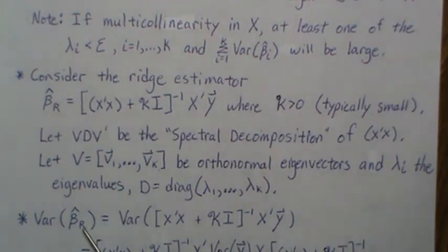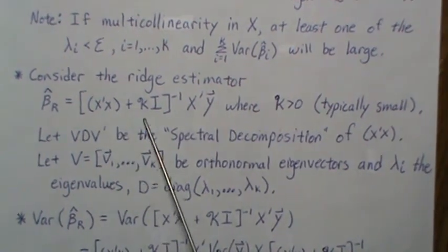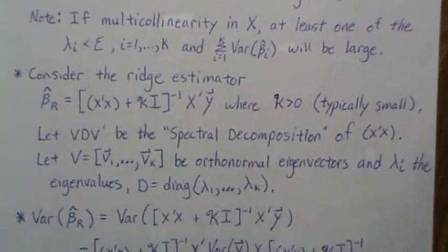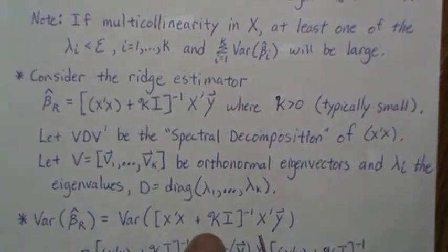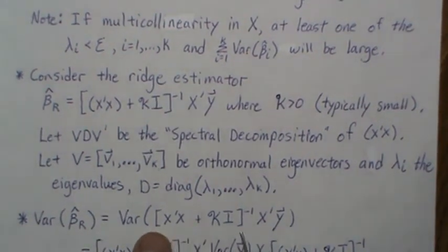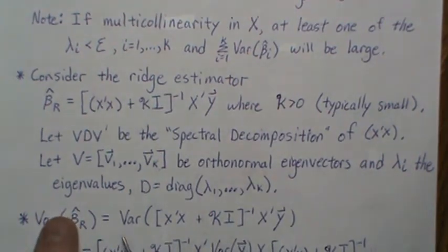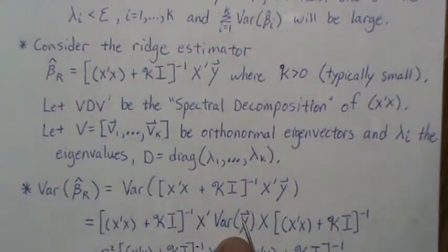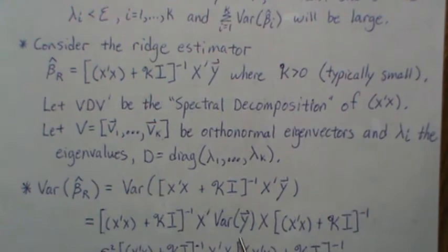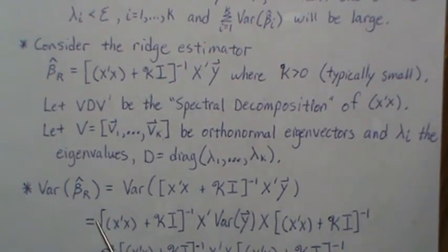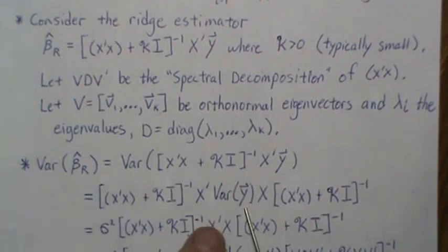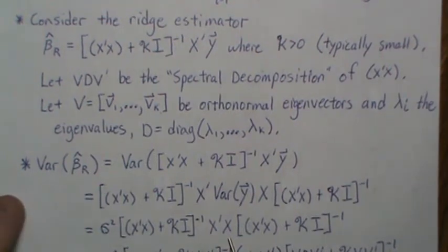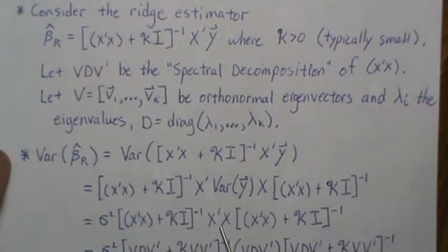Let's look at the variance-covariance matrix for the ridge estimator — not the least squares estimator, but the ridge estimator where we've added the shrinkage parameter down the diagonal. The variance is computed by taking the estimator, pulling constants out front and back, leaving us with the variance of y, which is sigma-squared I. The sigma-squared comes out as a constant and the identity vanishes, leaving us with this expression. Then we substitute in the spectral decomposition.